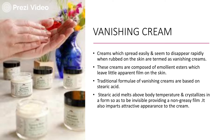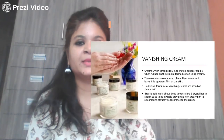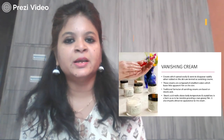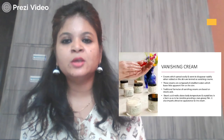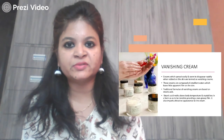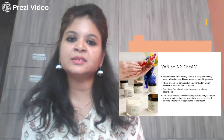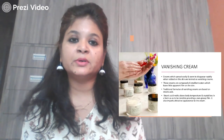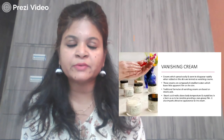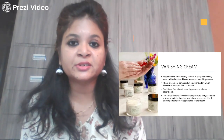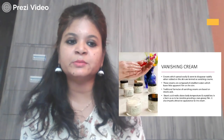The traditional formula of vanishing creams is based on stearic acid, which is one of the main important components. Stearic acid melts above body temperature and crystallizes in a form to be invisible, providing a non-greasy film, and also imparts an attractive appearance to the cream. Cold cream is a water-by-oil type cream — when applied, water evaporates leaving a thick oily layer giving a cooling sensation. Vanishing cream is the opposite, oil-by-water type, where water evaporates and there is no film left over the skin. The main component of vanishing cream is stearic acid.